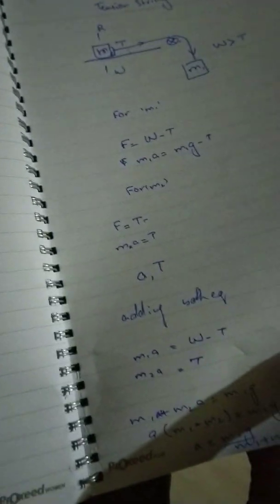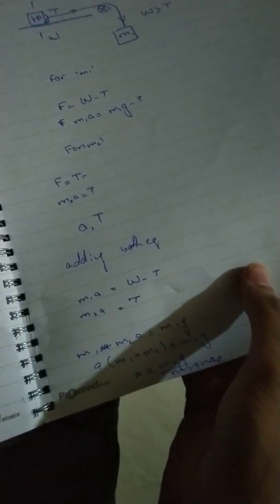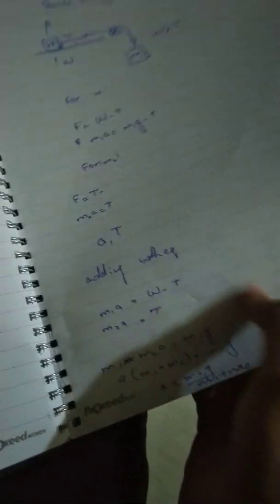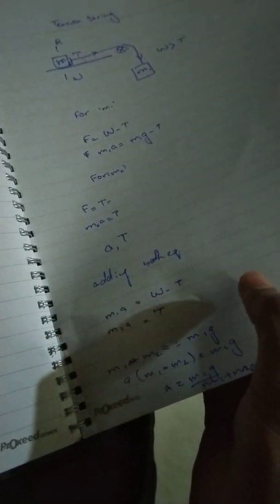All right. Now we have to derive tension. We are dividing this equation because we have M1 and M2, minus plus. When we have to derive tension, acceleration will cancel and M1 upon M2 will become this one.